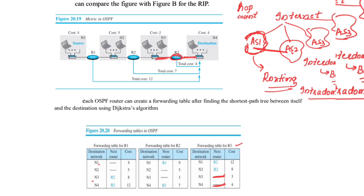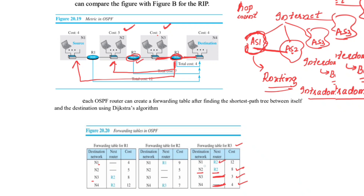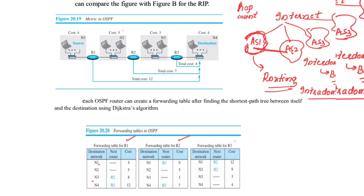For R3 to reach N2, it goes via R2 with cost 3 (N3) + 5 (N2) = 8. For R3 to reach N1, it goes via R2 with cost 3 + 5 + 4 = 12. This completes the forwarding tables for all three routers in this network scenario.